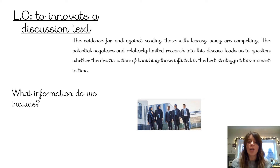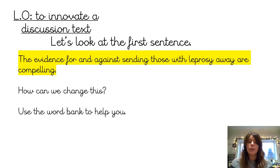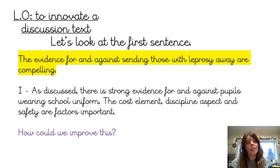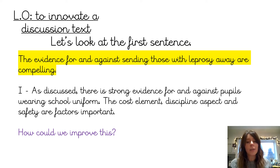So what information do we have to include? The evidence for and against. How can we change this first sentence? Look at the word bank on screen to help you. I've had a go on the next slide: as discussed, there is strong evidence for and against pupils wearing a school uniform. The cost element, discipline aspect and safety factors are important.